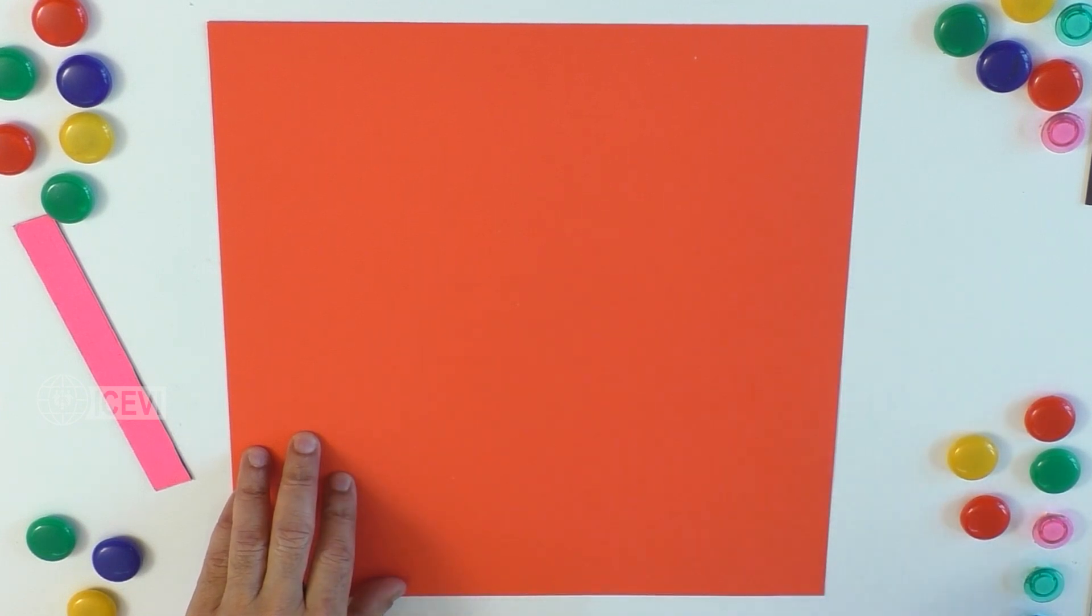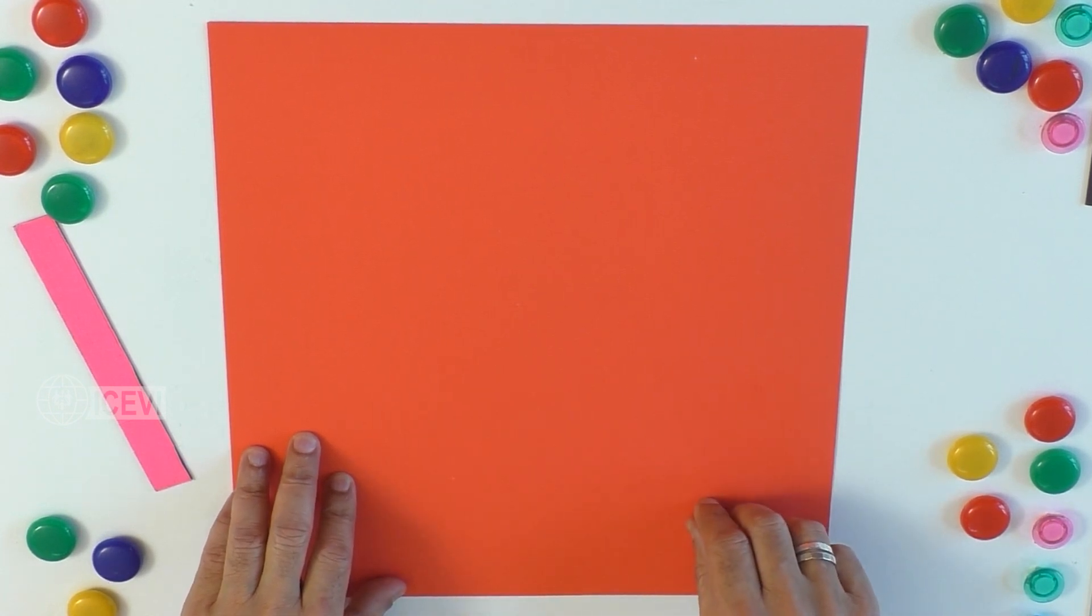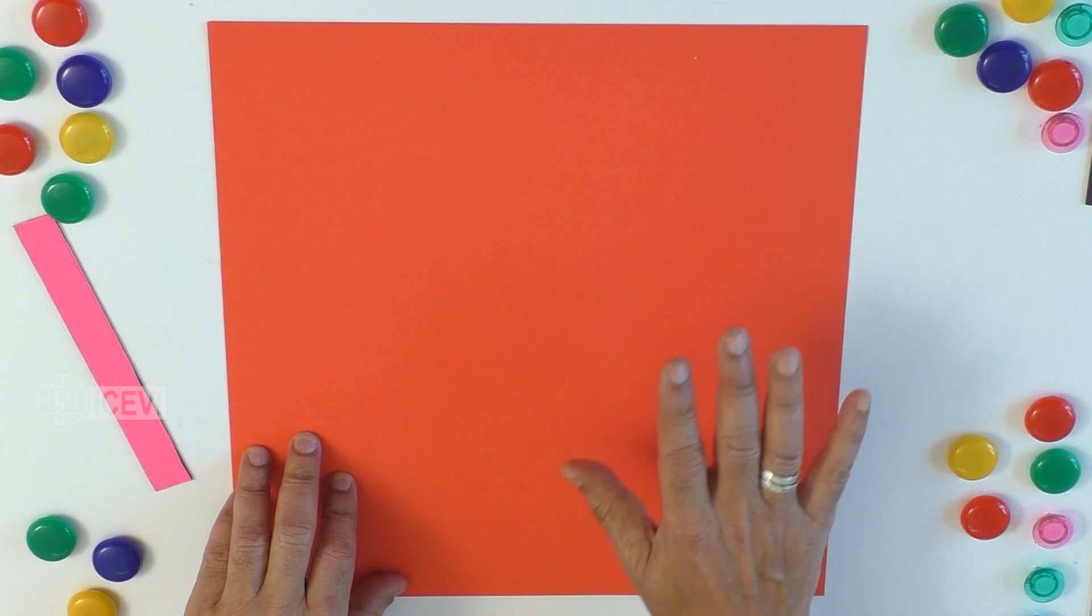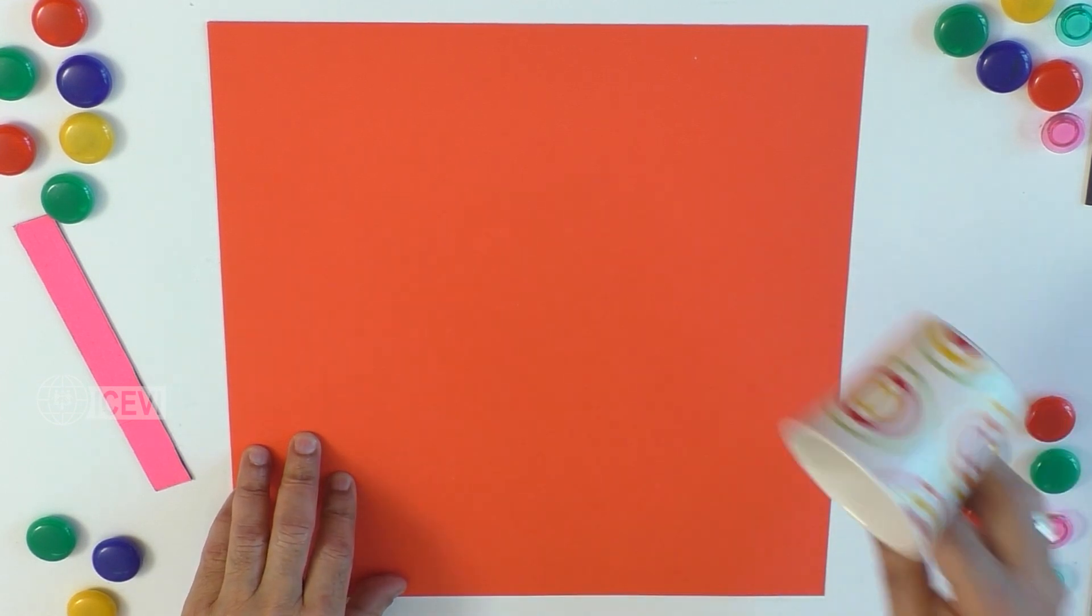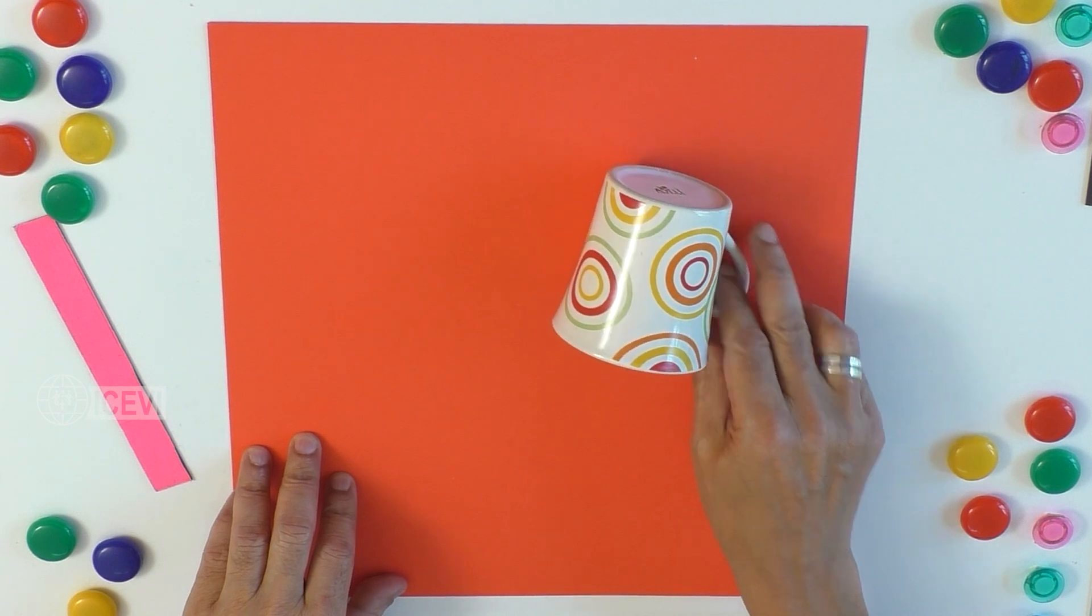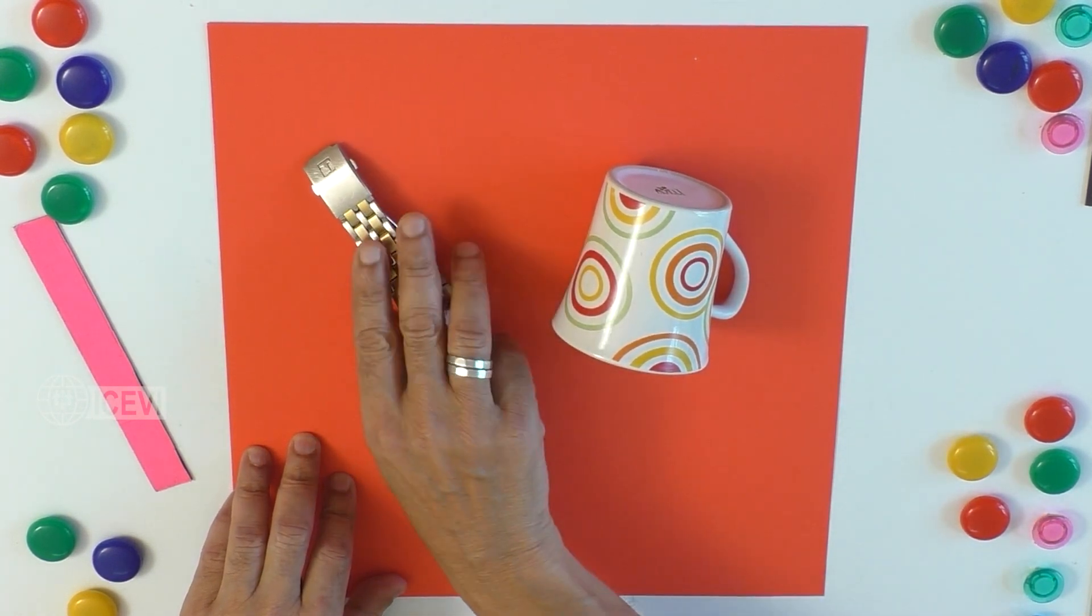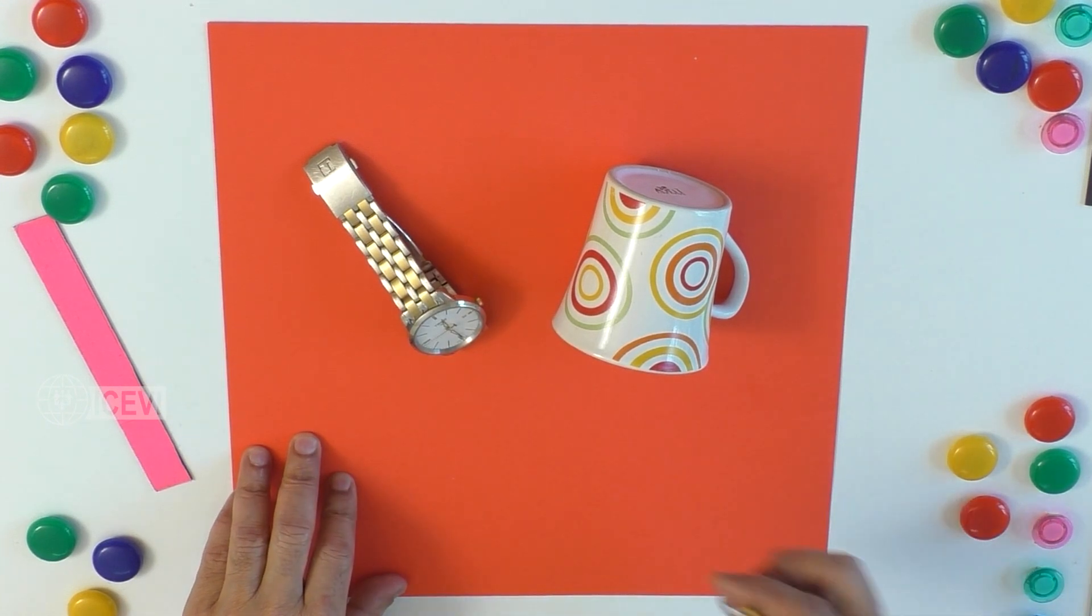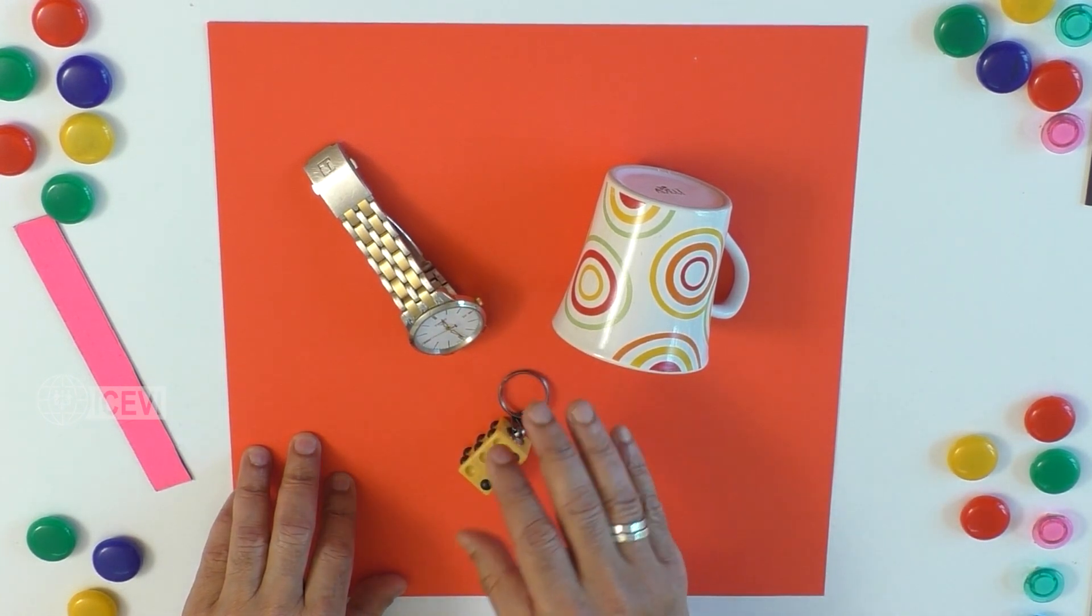Now let us start with the well-defined set. Elements that can be listed out. For example, you take a cup, you take a watch, and let us take a keychain. These elements can be listed out.